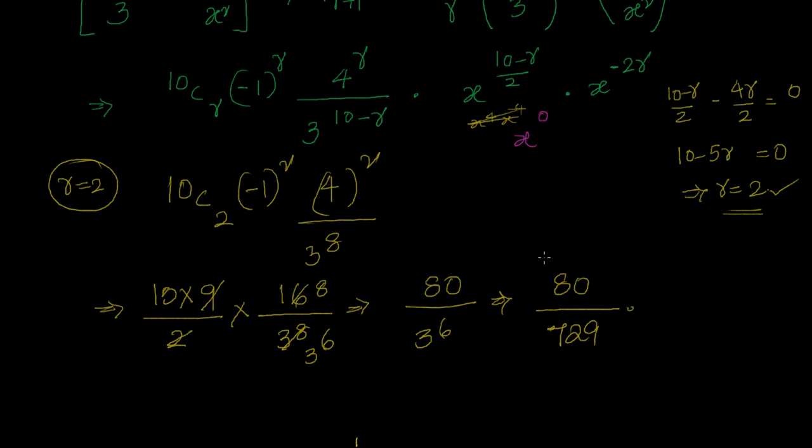That will be the value of the term. By the way what is this term? R equal to 2 what is this term? This is the third term. Remember that always right? T of r plus 1. That is nothing but T of 3. Because r is equal to 2. So the term is third term. And the value is 80 by 729. That's the answer.